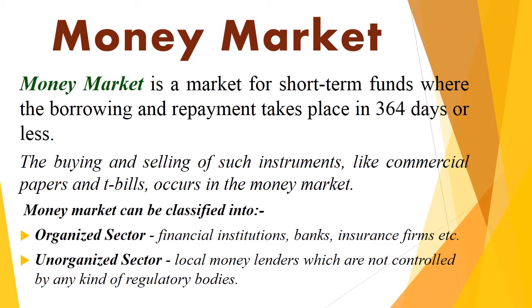Buying and selling of various instruments like commercial bills or treasury bills occur in the money market. It can be further grouped into two types: organized sector and unorganized sector. In the organized sector, the banks, financial institutions and insurance companies are governed by regulatory bodies like SEBI, RBI or the Government of India. The unorganized sector includes local money lenders whose activities are not under the control of any regulatory body.